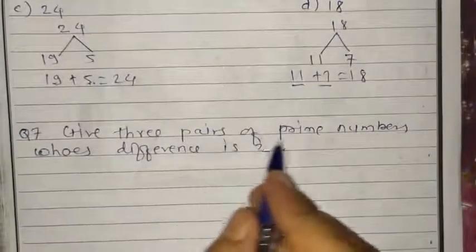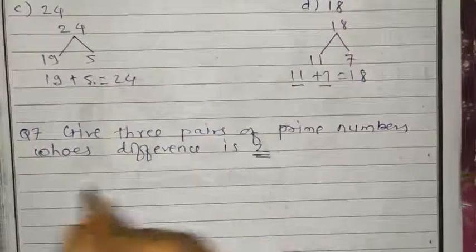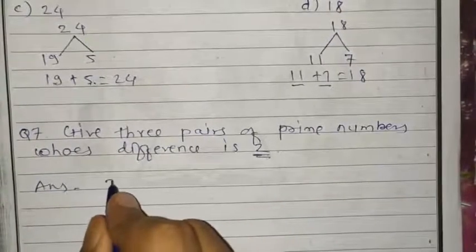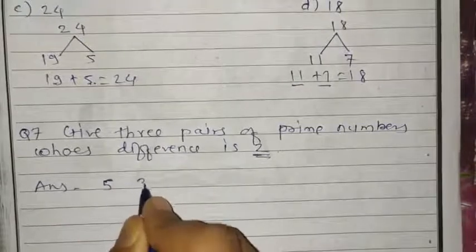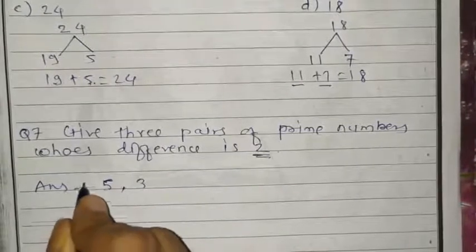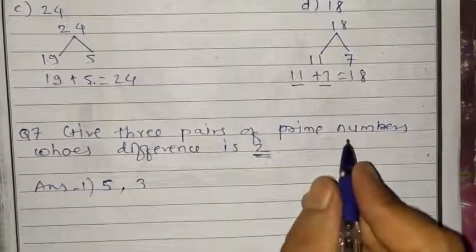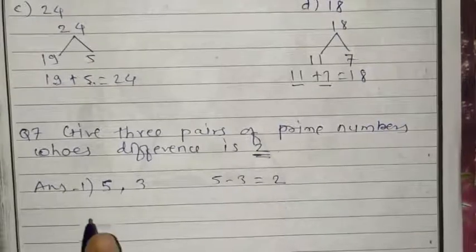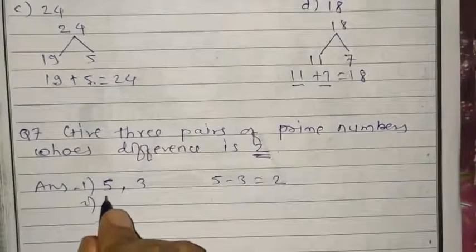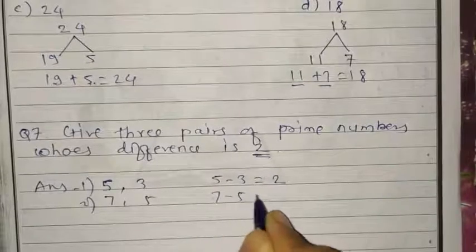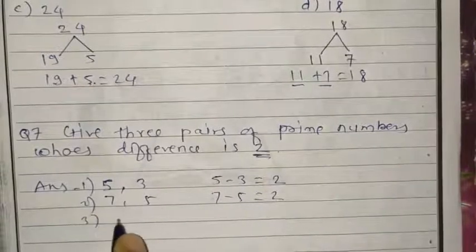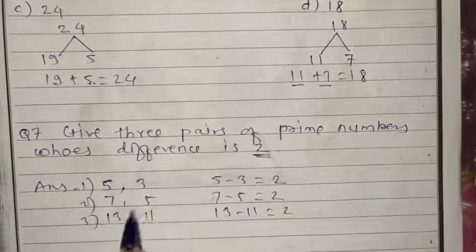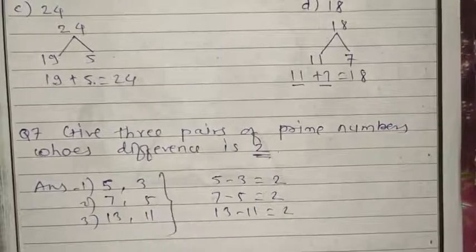Question number 7: write 3 pairs of prime numbers whose difference is 2. The difference should be 2 between the prime numbers. First pair: 5 and 3, because 5 minus 3 is 2. Second pair: 7 and 5, because 7 minus 5 is 2. Third pair: 13 and 11, because 13 minus 11 is 2. So these are the 3 pairs whose difference is 2.